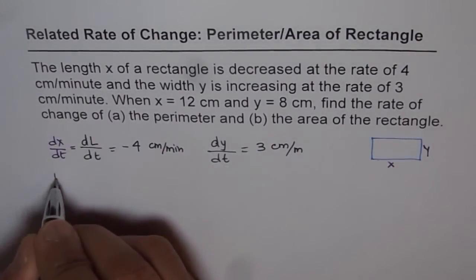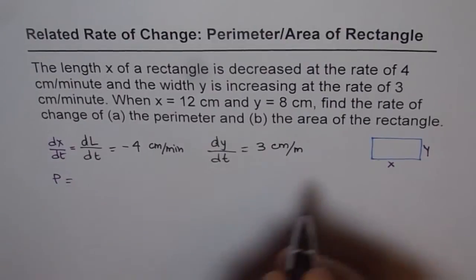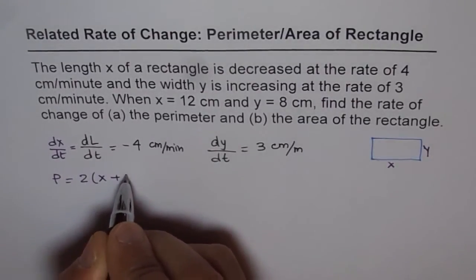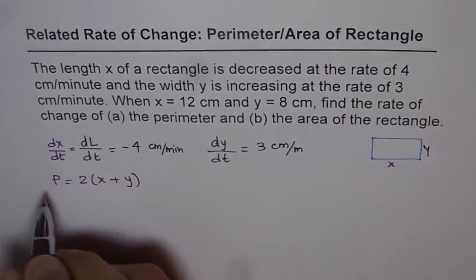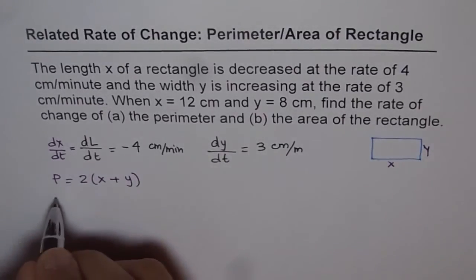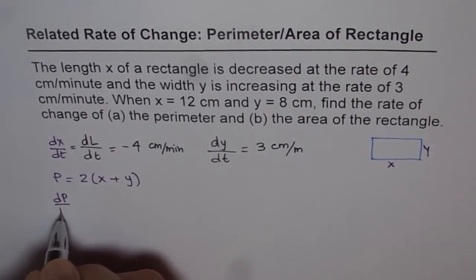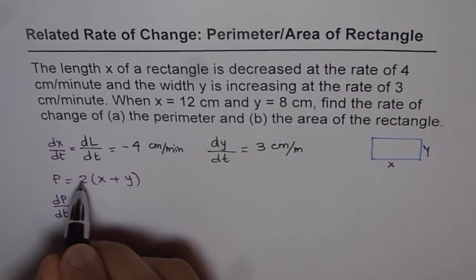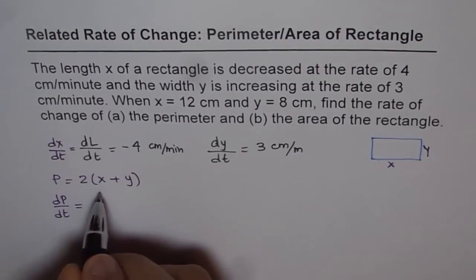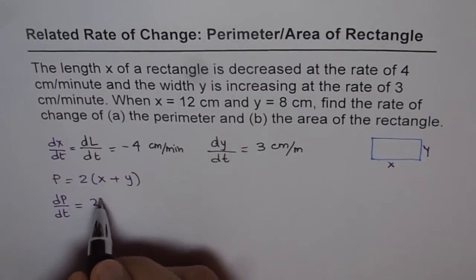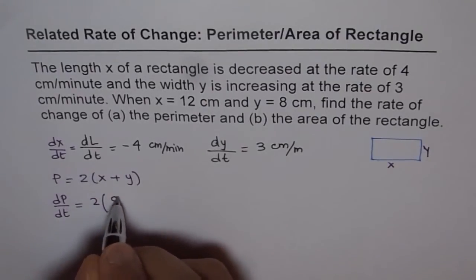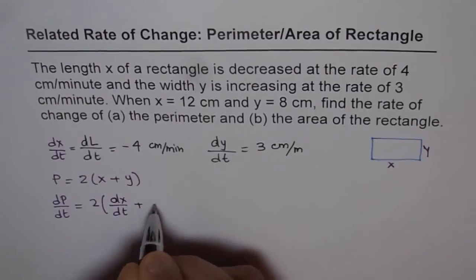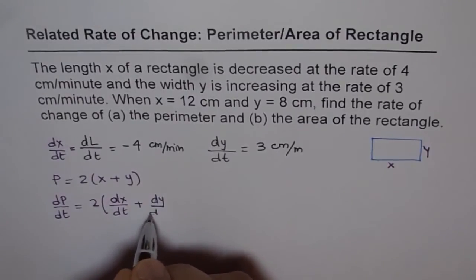So two things we have to consider. What is perimeter? The perimeter of a rectangle is 2 times (x plus y). So the rate of change of perimeter will be dP/dt, which will be 2 times the derivative, giving us dx/dt plus dy/dt.